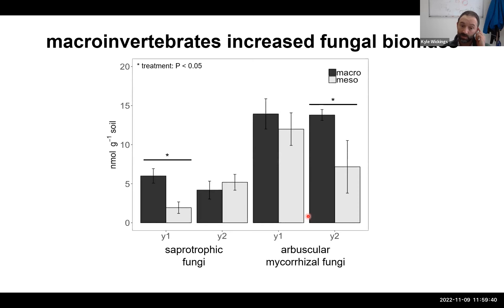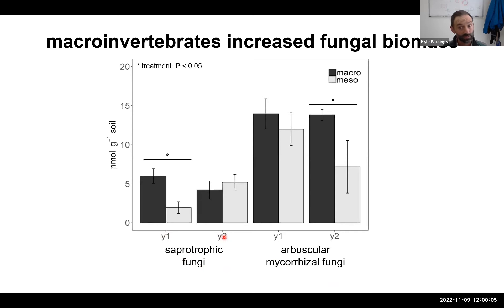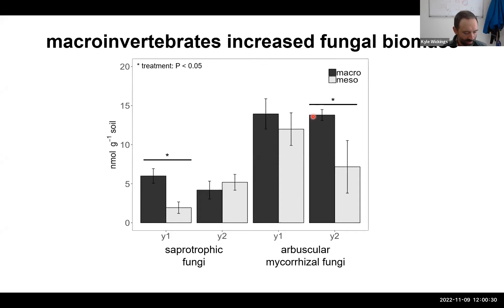Looking at microbial biomass first: for both saprotrophic/decomposer fungi and mycorrhizal fungi, Natalie found that the presence of macroinvertebrates — primarily earthworms — stimulated fungal biomass. This happened in year one for decomposer fungi and in year two for mycorrhizal fungi. Mycorrhizae are really important in stress tolerance for plants and help roots acquire nutrients beyond what they otherwise could. So it's interesting she saw this response in two different functional types of microbes.